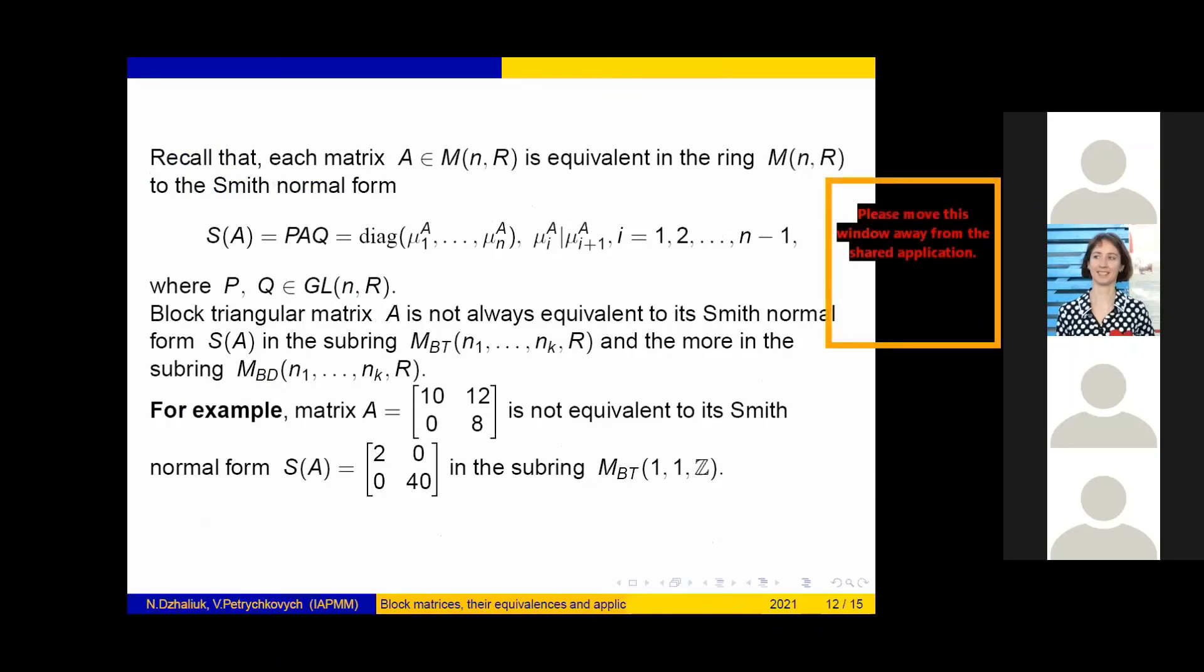Recall that each matrix A is equivalent in the ring M_n(R) to the Smith normal form S(A). It is a diagonal matrix with conditions of divisibility of diagonal elements. Block triangular matrix A is not always equivalent to its Smith normal form S(A) in the subring M_BT and even less in the subring M_BD.